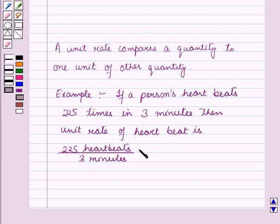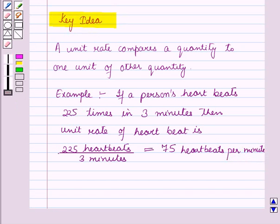We divide both numerator and denominator by 3 and we get this equal to 75 heartbeats per minute. This result will work out as a key idea for solving the given question.